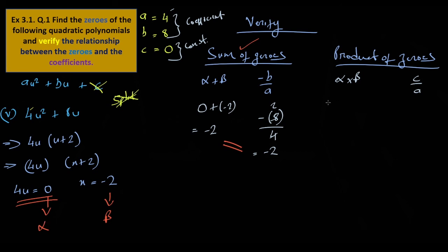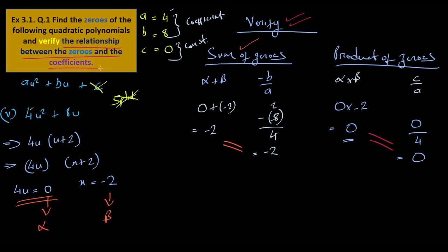Alpha equals zero, beta equals minus two. We can verify: sum of zeros equals zero plus minus two equals minus two, and minus b by a equals minus 8 over 4 equals minus two. This confirms the relationship between the zeros and the coefficients. Verify — bye.